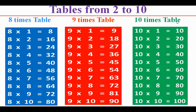10 times table: 10 1s are 10, 10 2s are 20, 10 3s are 30, 10 4s are 40, 10 5s are 50, 10 6s are 60, 10 7s are 70, 10 8s are 80, 10 9s are 90, 10 10s are 100.